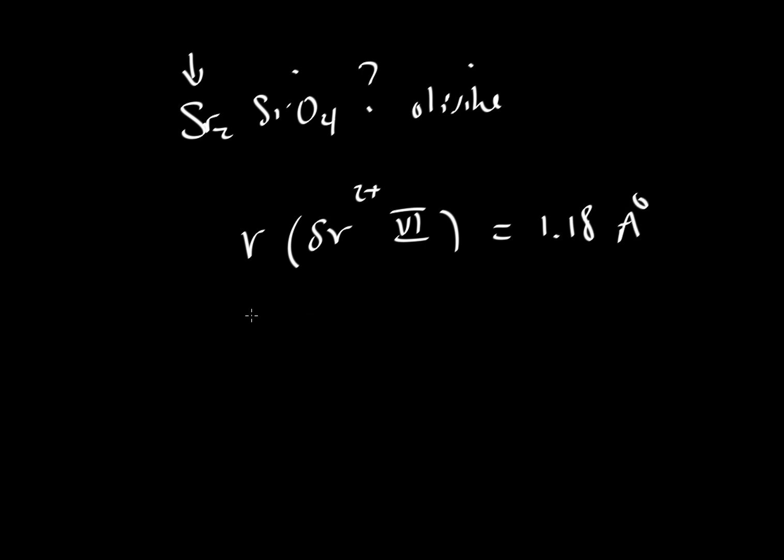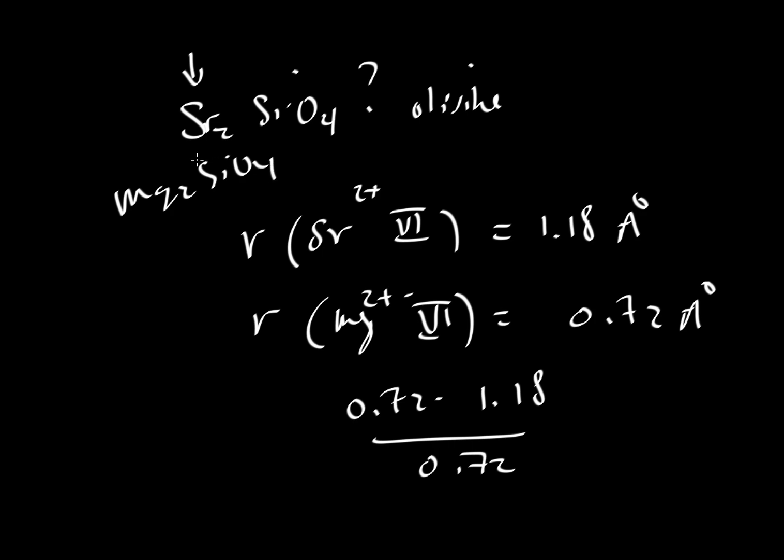Then we have the radius of magnesium, always two-plus, again in six-fold coordination for olivine. It's 0.72 angstroms. We'll take the difference: 0.72 minus 1.18 divided by 0.72. We're going to use magnesium as our reference because we know that the Mg2SiO4 case exists. We're wondering if we could put in strontium here. We get a value of 0.639, so that is 63.9%.